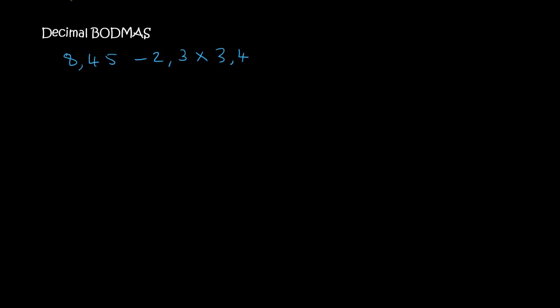At this point, you guys know how to plus, minus, times, and divide with decimals. But we should never forget BODMAS. Some students are going to say 8.45 minus 2.3. That is incorrect. Why? Because BODMAS says that multiplication should come first. So let's do that sum first.